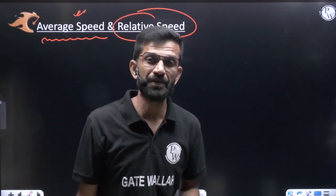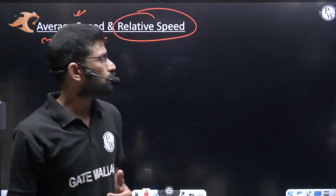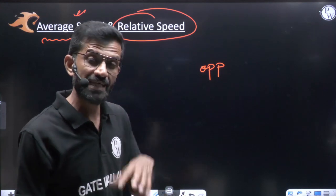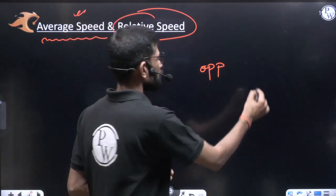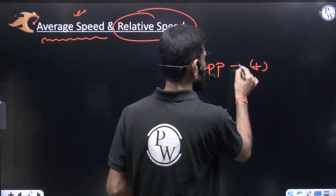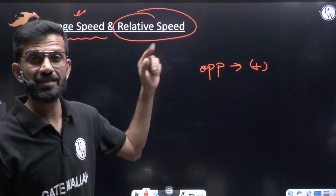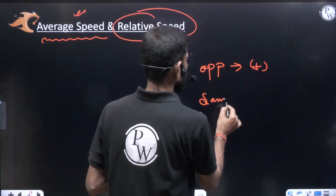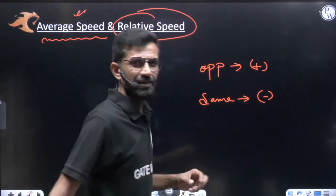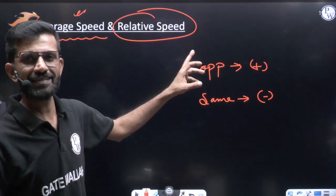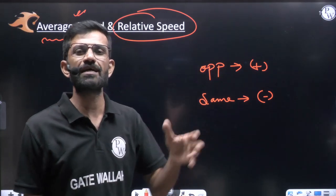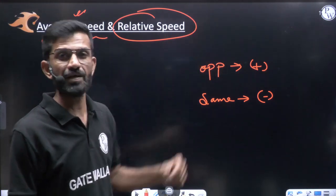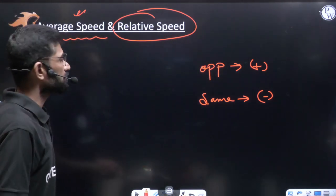Relative speed was also discussed previously in the clocks topic. Two objects moving in opposite directions: their relative speed is the sum of their speeds. Two objects moving in the same direction: their relative speed is the difference. We discussed the reasoning for adding and subtracting in the clocks topic.